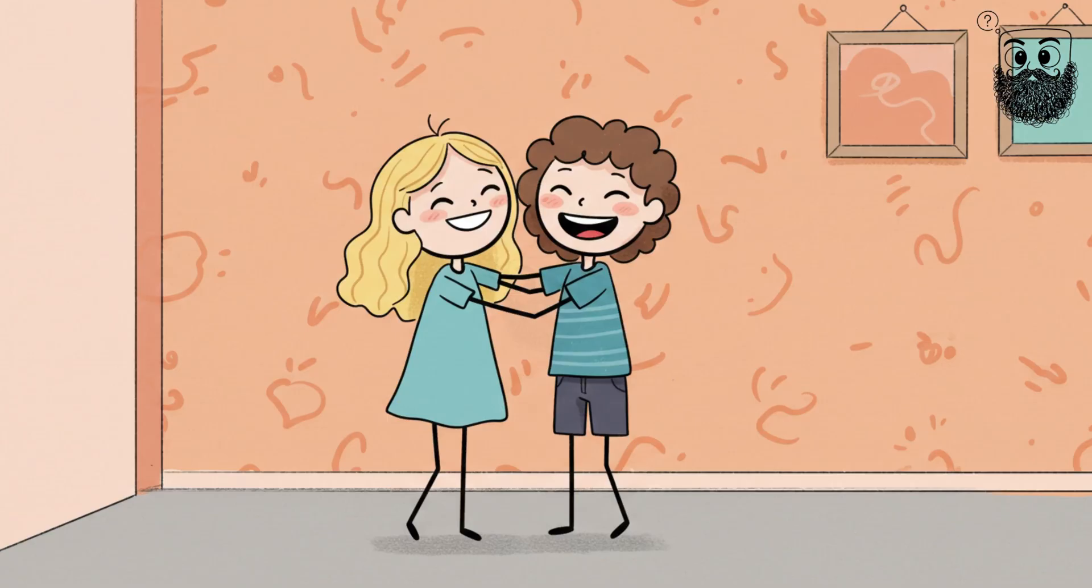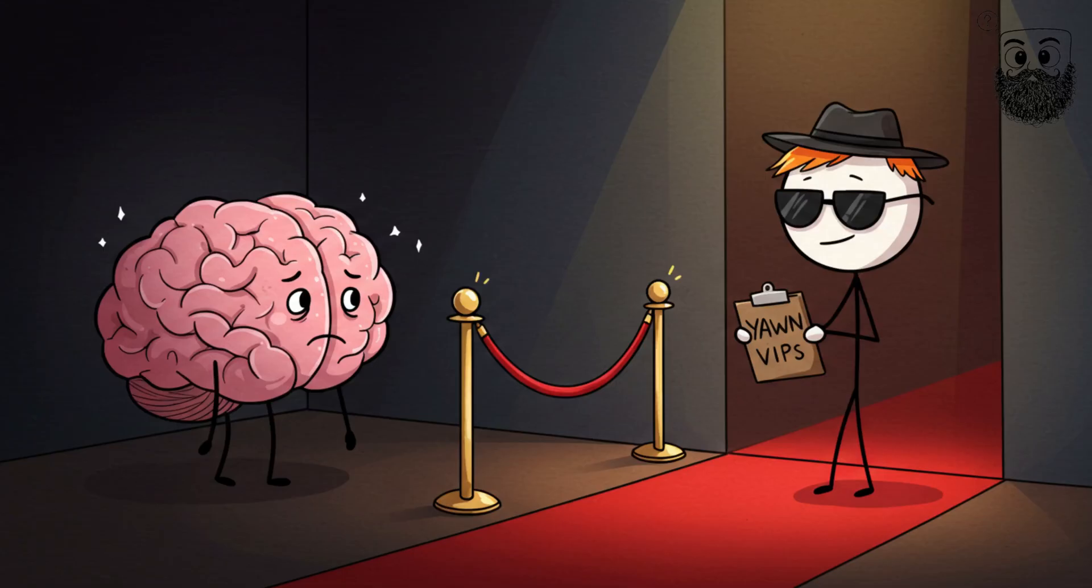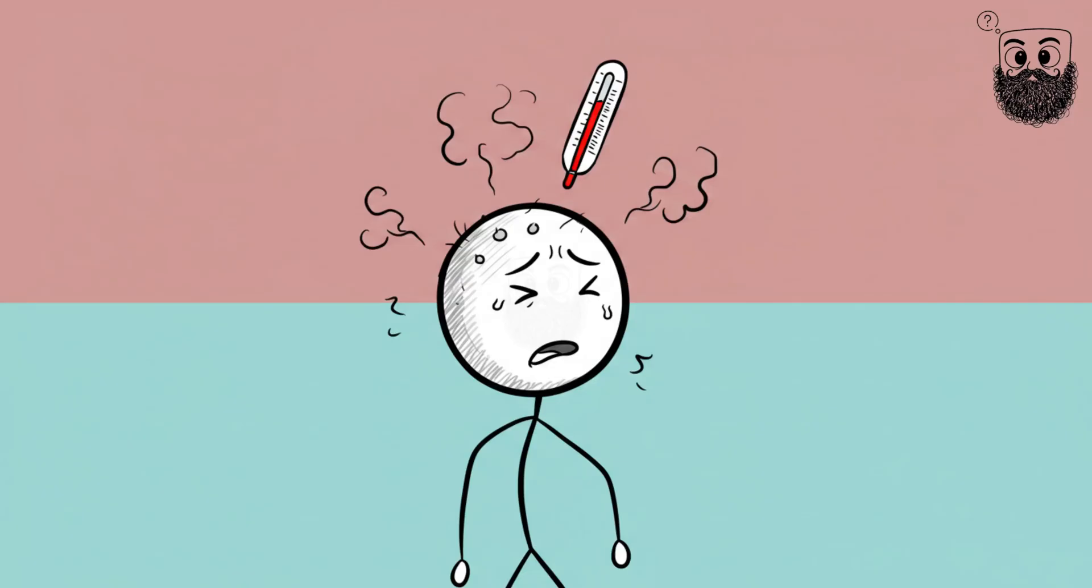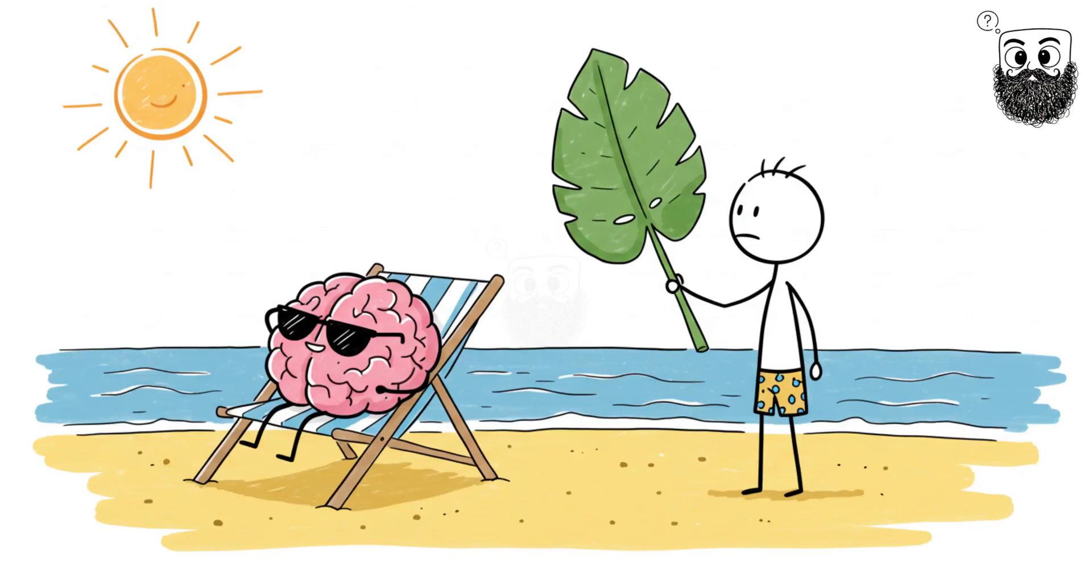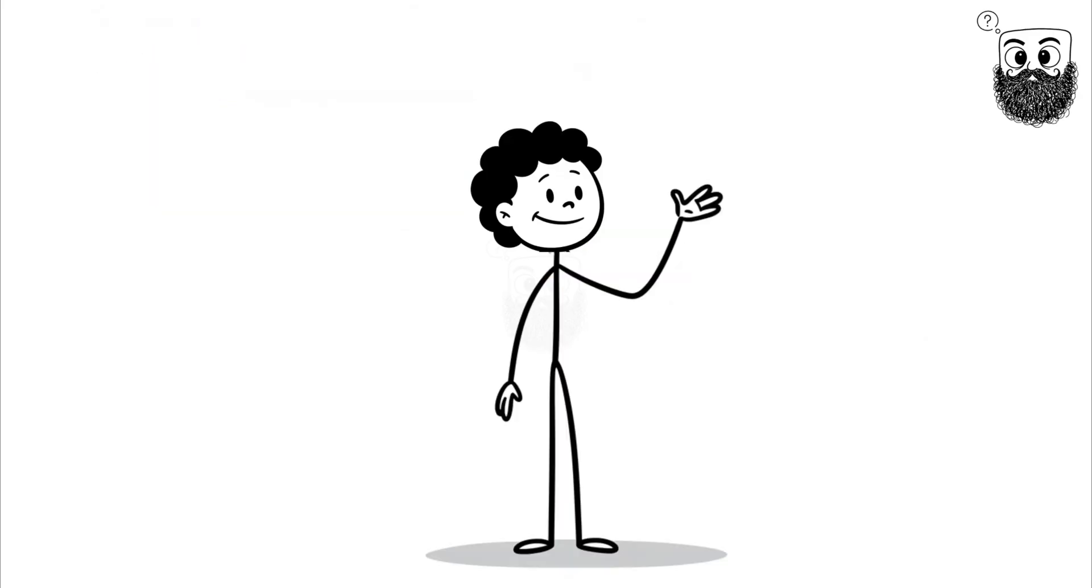You're more likely to catch a yawn from someone you know than a stranger. It's like your brain has a VIP list for whose yawns it copies. Some scientists think it's all about brain temperature. When you yawn, you're giving your brain an air conditioning break. But that doesn't explain why it's contagious.